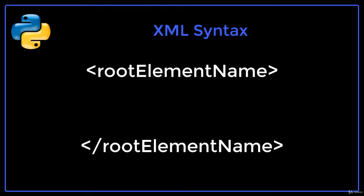The closing tag consists of an opening angular bracket, followed by a forward slash, and then the name of the root element, and finally a closing angular bracket.